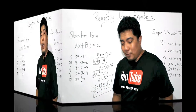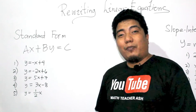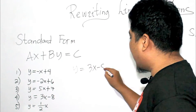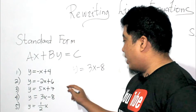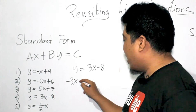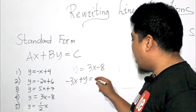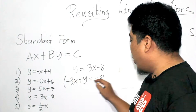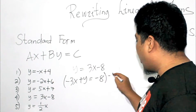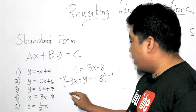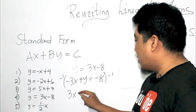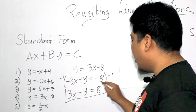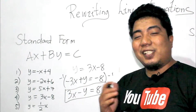For our fourth example, we have Y is equal to 3X minus 8. We transpose the 3X, giving us negative 3X plus Y is equal to negative 8. Since A is negative, we multiply the whole equation by negative 1, giving us positive 3X minus Y is equal to positive 8. That is your final answer.